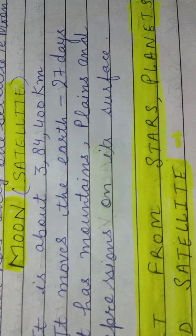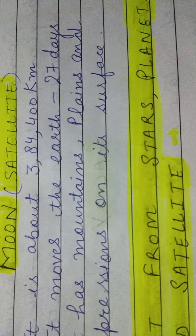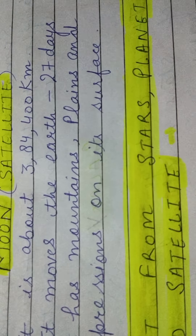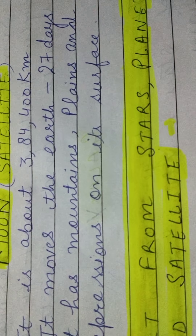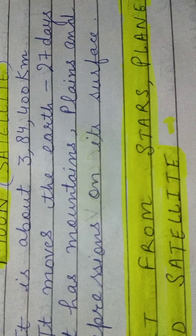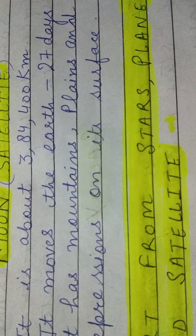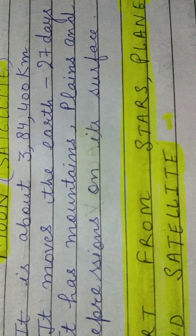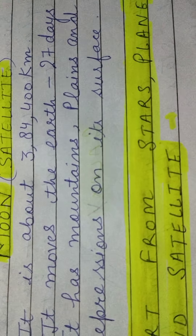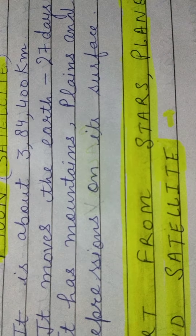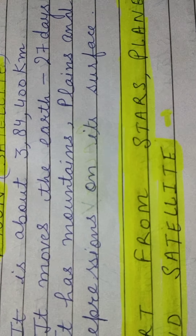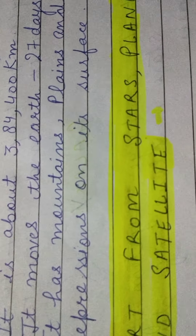So what have we discussed students? We have discussed that the Moon is nearer to the earth, that is why it appears big. It is about 384,400 kilometers away from earth. It moves around the earth in 27 days. It has mountains, plains and depressions on its surface.